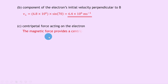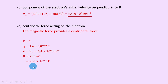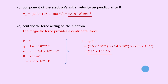Part c: calculate the centripetal force. Just like question five, the magnetic force provides the centripetal force, so f equals qvb. Charge q is 1.6e-19 coulombs. The velocity used here is the perpendicular component, 6.4e6 meters per second, because it's the perpendicular component that produces circular motion. Magnetic induction b is 230 millitesla = 230e-3 tesla. Substituting: 1.6e-19 times 6.4e6 times 230e-3 = 2.36 times 10 to the minus 13 newtons, acting towards the center of the circular path.